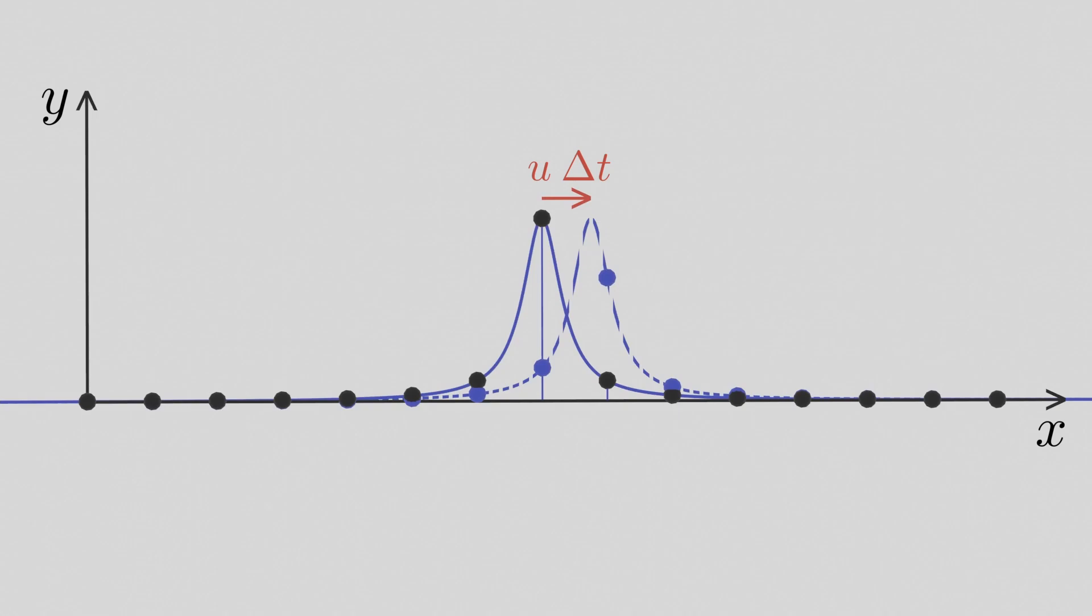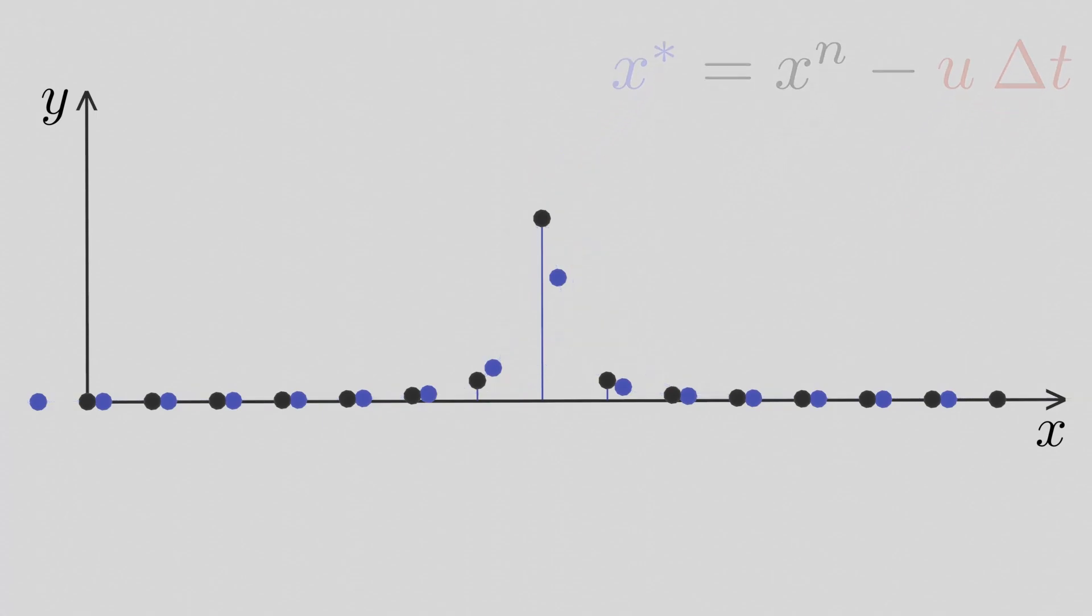The trick is to imagine that the grid points are particles, and then move them in the opposite direction the wave was traveling. However, we can't forget that we only know the y-values at discrete locations represented here by the black dots.